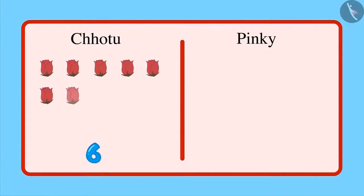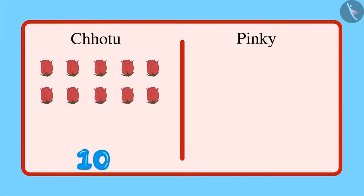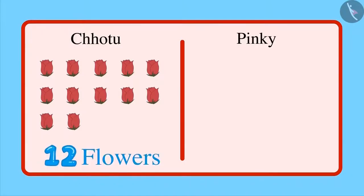First let's see how many flowers Chotu has brought. These are 1, 2, 3, 4, 5, 6, 7, 8, 9, 10, 11 and 12 flowers.